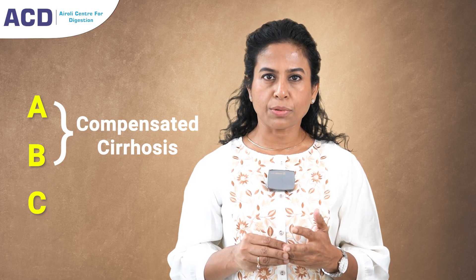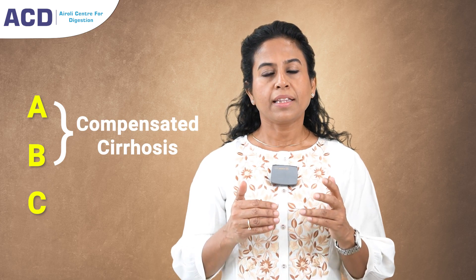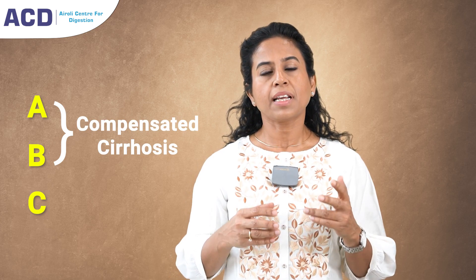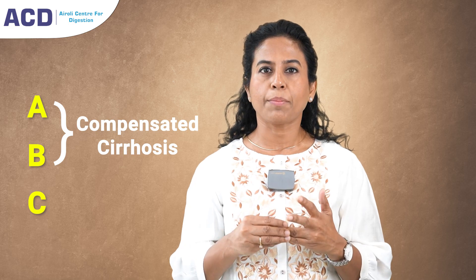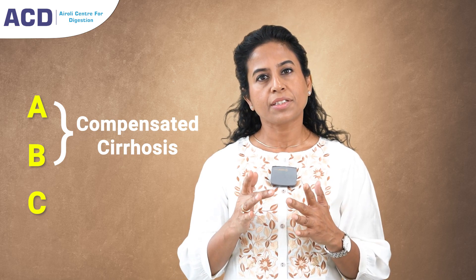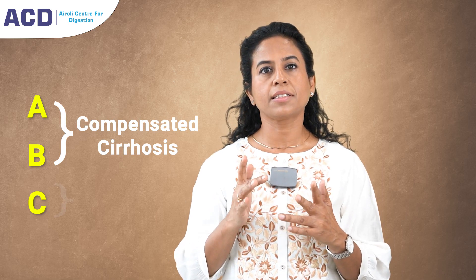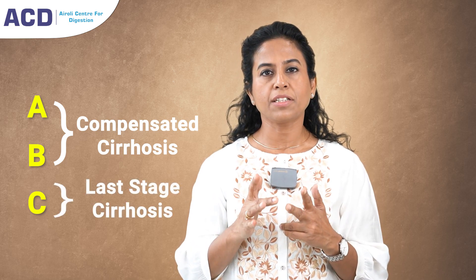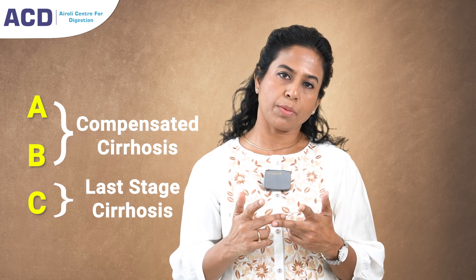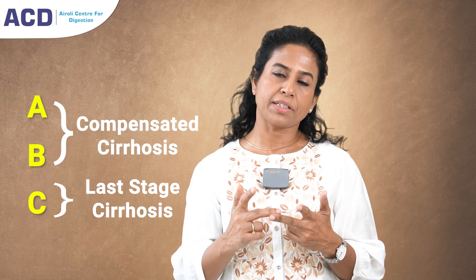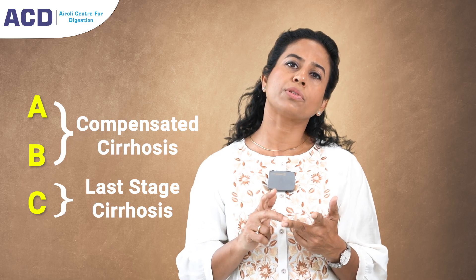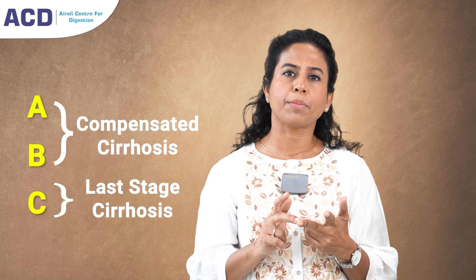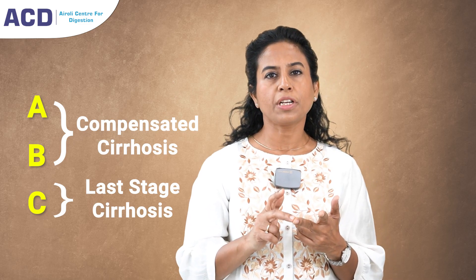Cirrhosis is basically the end stage of fibrosis, and there are three stages: A, B, and C. Stages A and B are compensated cirrhosis — the patient doesn't have symptoms, but liver fibrosis and damage are ongoing. Stage C is the last stage, where the patient starts developing symptoms and comes to know they have liver damage, usually after 10 to 15 years.